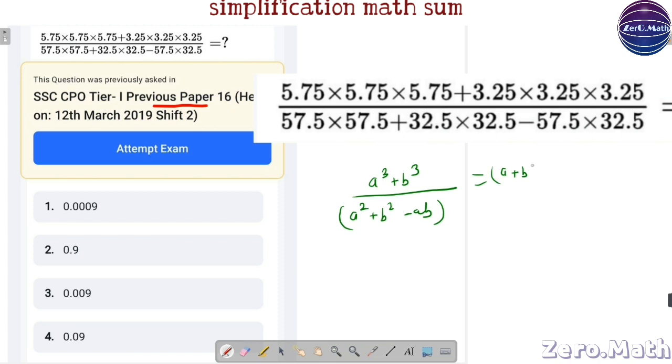Now, this a cubed plus b cubed, if you know the property, we can rewrite it as a plus b into a squared plus b squared minus ab. This a squared plus b squared minus ab get cancelled out to each other and finally you get answer as a plus b.